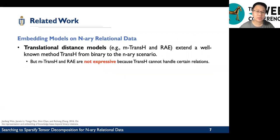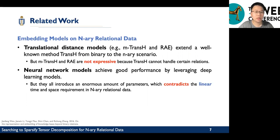First, translational distance models extend a well-known method to translate from binary to n-ary, but they are not expressive because translation cannot handle certain relations. Second, neural network models achieve good performance by utilizing deep learning models, but they all introduce an enormous amount of parameters which contradicts the linear time and space requirement in n-ary relational data.